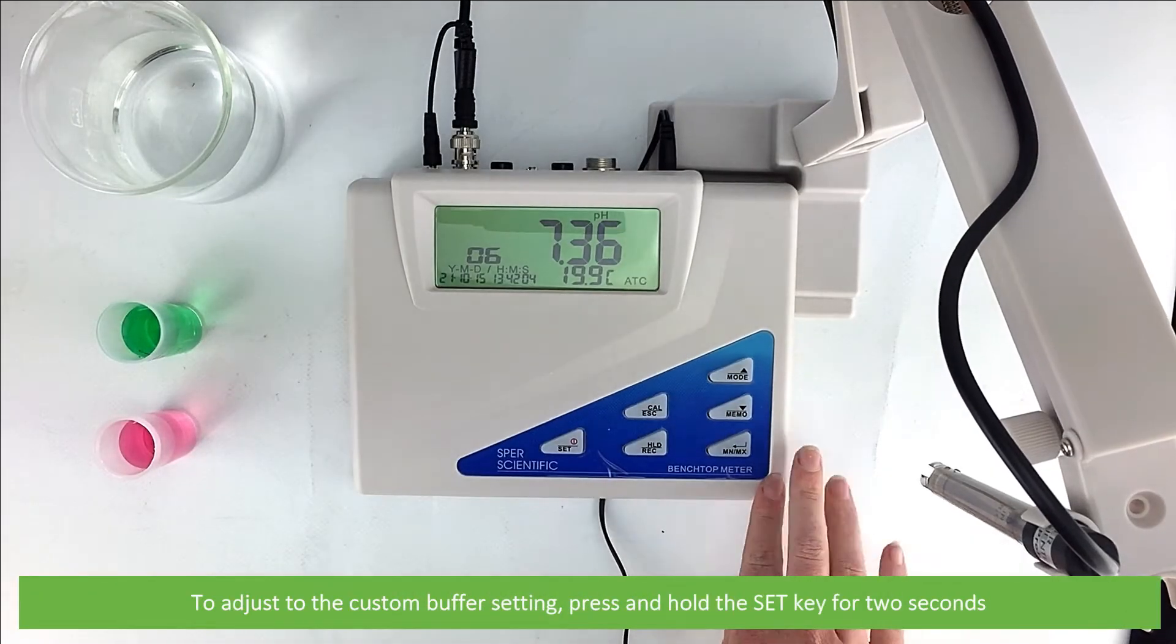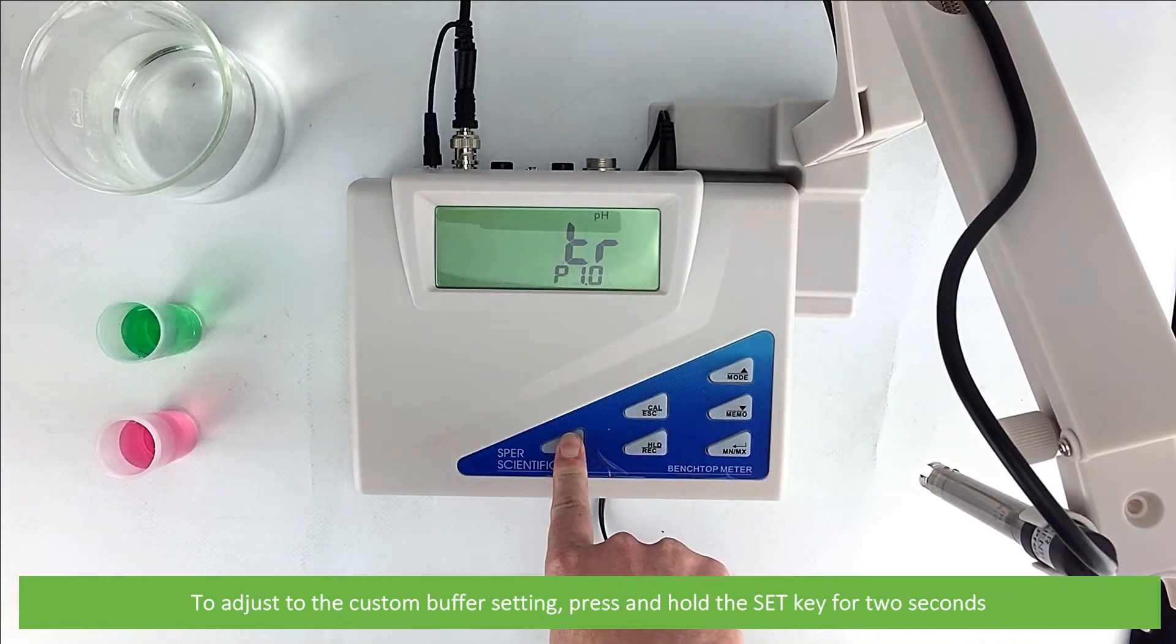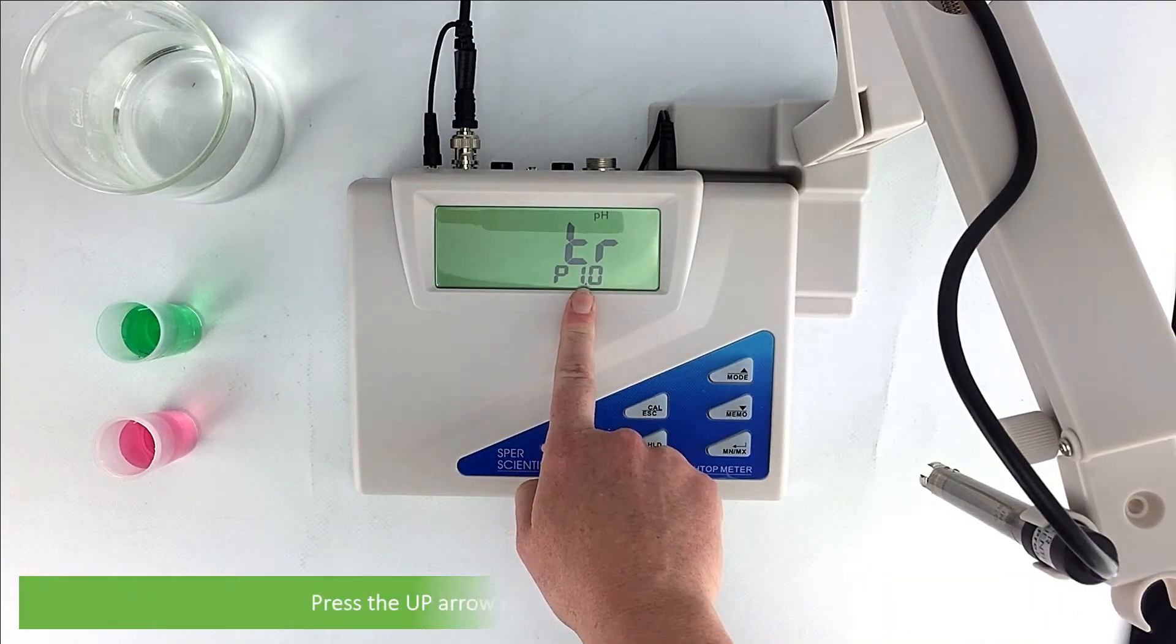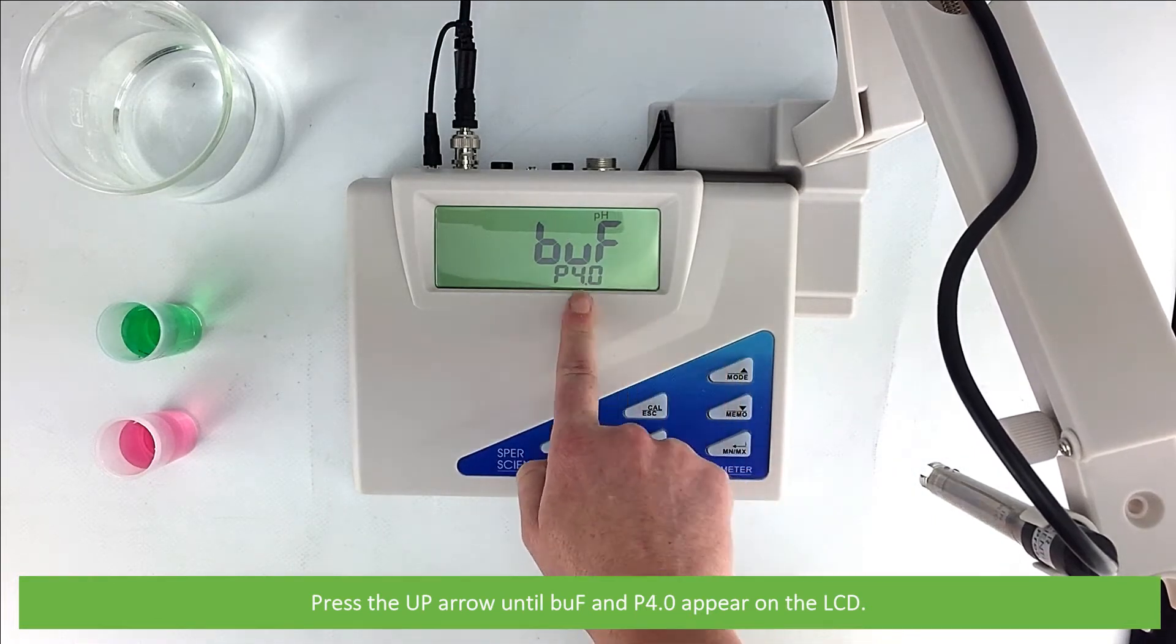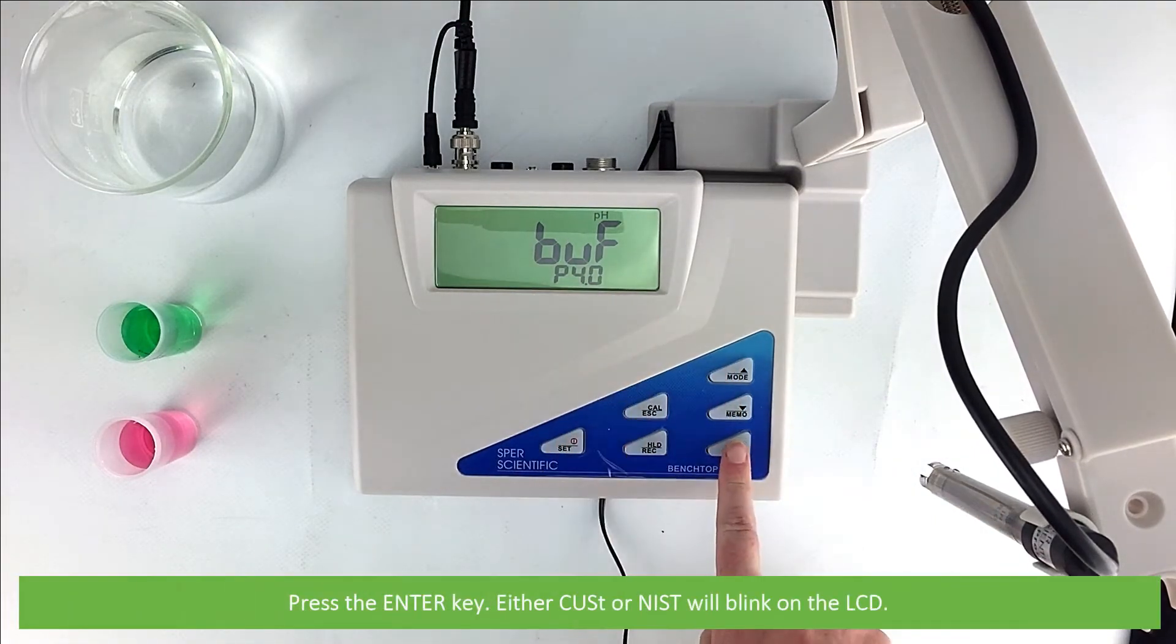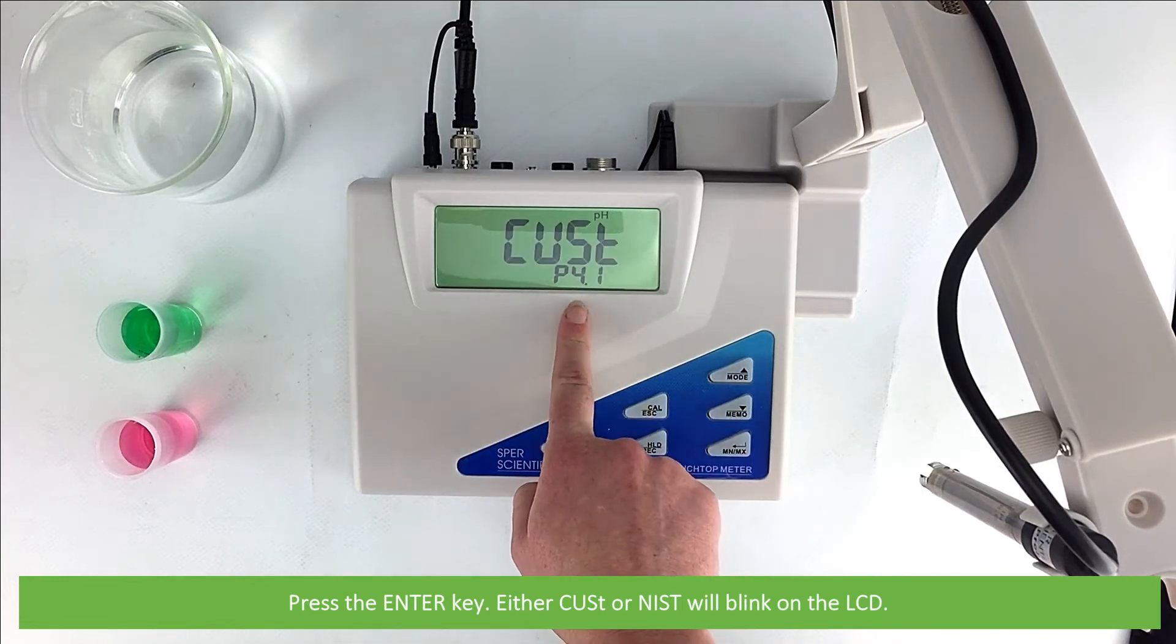To adjust to the custom buffer setting, press and hold the set key for two seconds. Press the up arrow until BUF and P 4.0 appear on the LCD. Press the enter key. Either CUST or NIST will blink on the LCD.